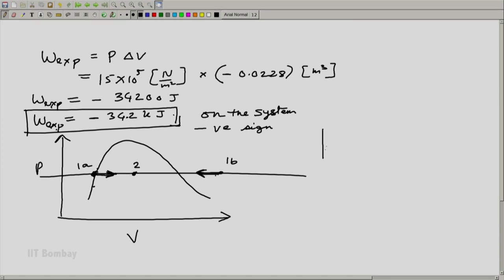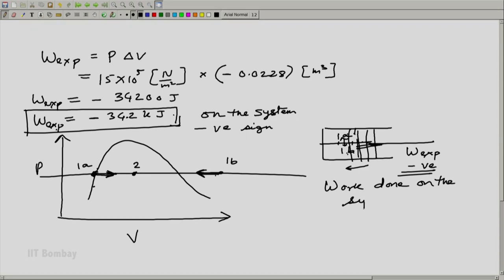So if I see the piston arrangement, this was 1a and 1b and as soon as the state 1a got mixed with state 1b, the state 2 resulted in decrease in volume and because of which this piston came somewhere at this point. And which is why we have got w expansion work as negative, which is work done on the system. So because of this saturated liquid and superheated steam got together, the piston actually came inside, which is what we say work done on the system.